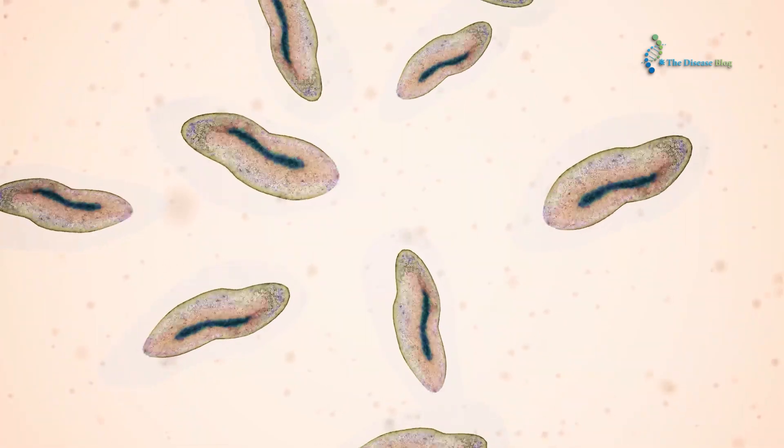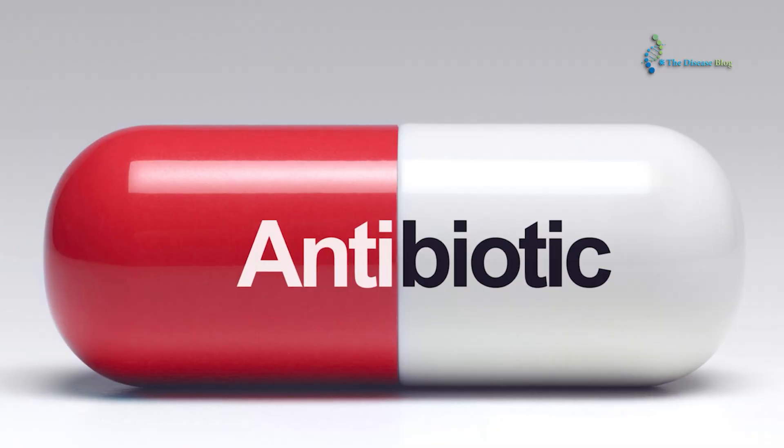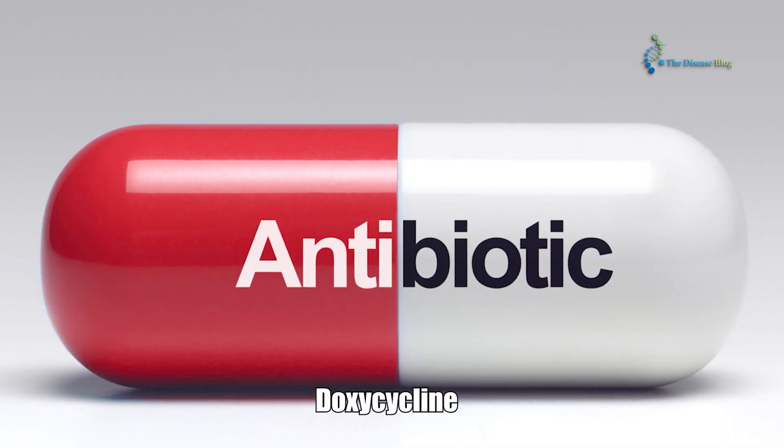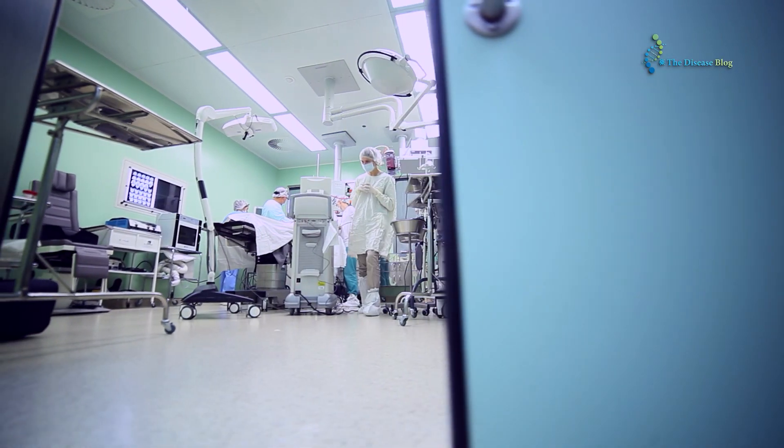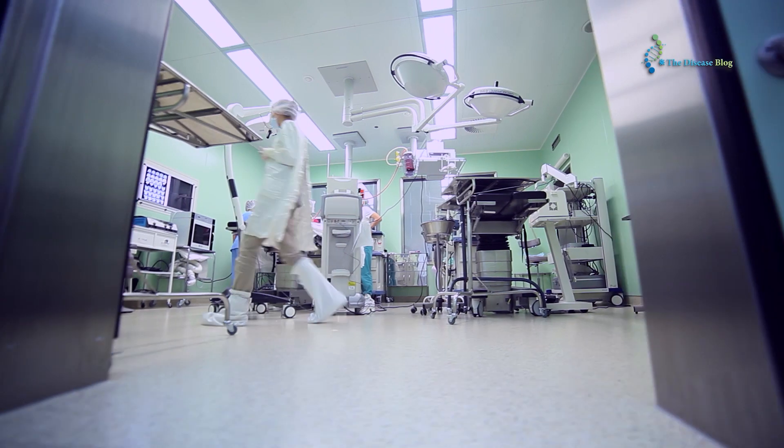Wolbachia bacteria inhabit the guts of microfilaria, providing them with certain nutrients and assisting them in their survival. An antibiotic like doxycycline kills Wolbachia bacteria, thus limiting the survival rate of microfilaria and ceasing their transformation into adult worms. Treatment with doxycycline requires four to six weeks to eliminate the microfilaria from the patient's body.